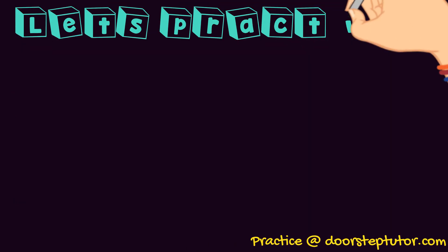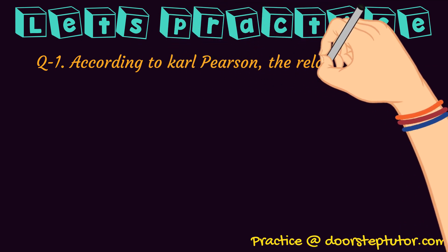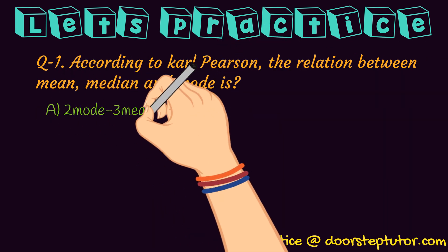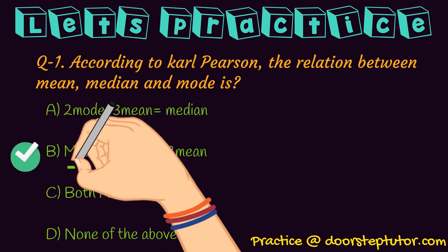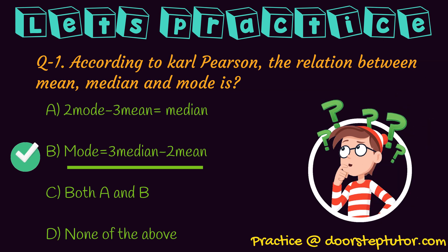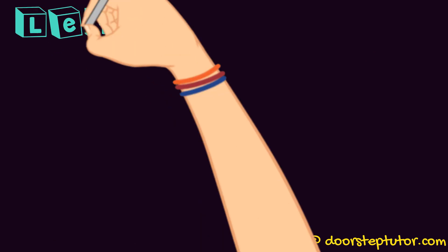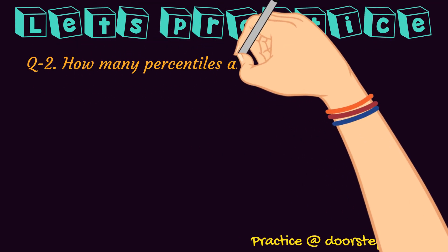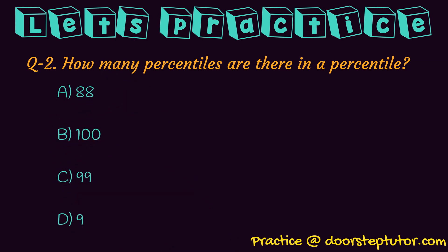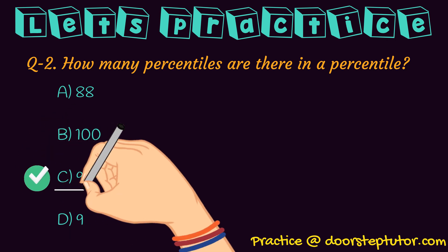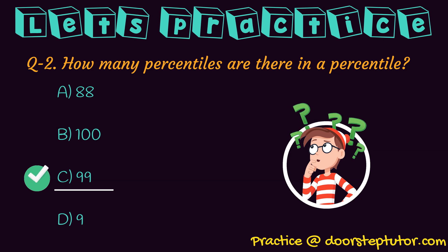Let's practice some important questions. According to Carl Pearson, the relationship between mean, median, and mode is: Mode = 3 Median − 2 Mean, so the correct answer would be option B. How many percentiles are there in a percentile series? The correct answer is 99 percentiles, because at the end of every part a percentile is formed — it divides the series into 100 parts but there are 99 percentiles.